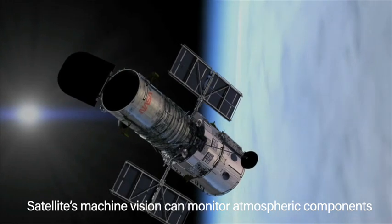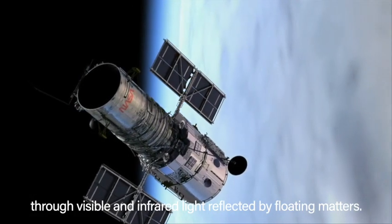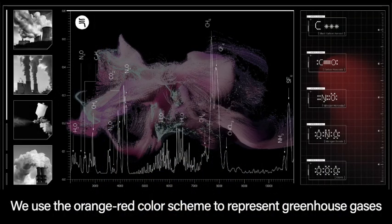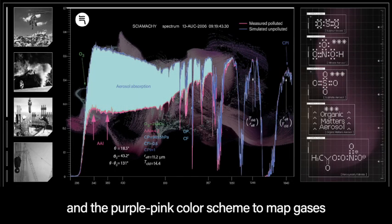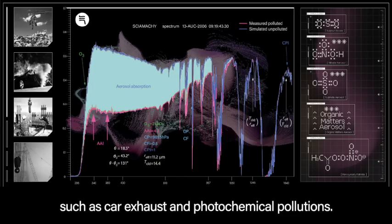Satellite's machine vision can monitor atmospheric components through visible and infrared light reflected by floating matters. We use the orange-red color scheme to represent greenhouse gases, and the purple-pink color scheme to map gases generated by urban life, such as car exhausts and photochemical pollutions.